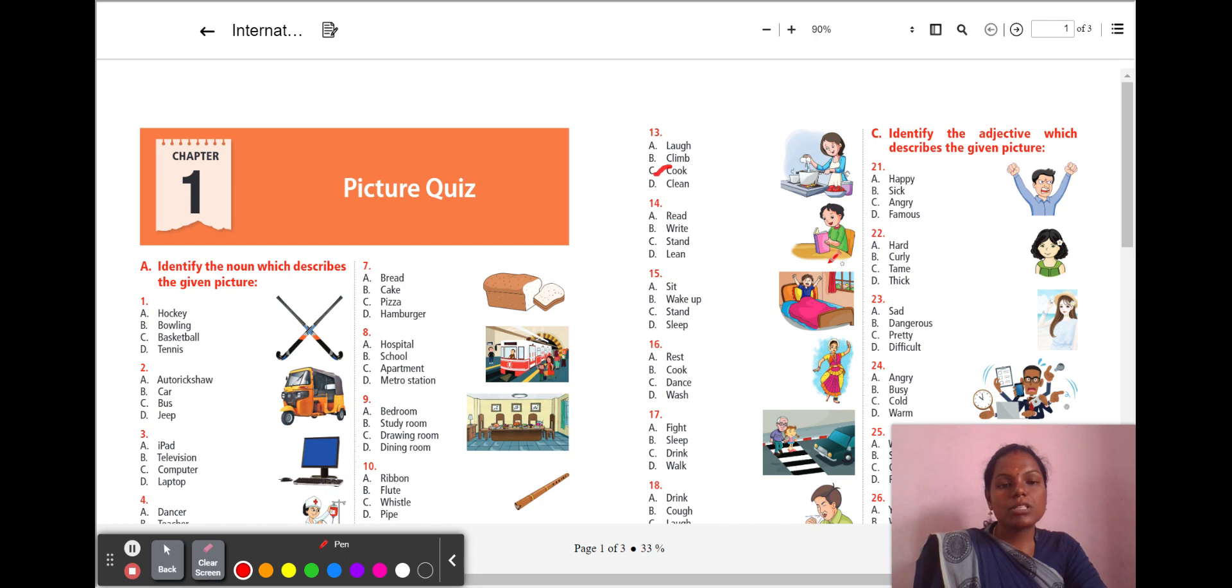14th question. What is the boy doing with the book? A, read. B, write. C, stand. D, leave. The boy is reading the book. So, all the options given here are verbs. We have to select the right verb for the given picture. A boy is in the bed. It seems like early morning. He wakes up from his sleep. So, which is the right action word here? A, sit. B, wake up. C, stand. D, sleep. So, your answer is B, wake up.